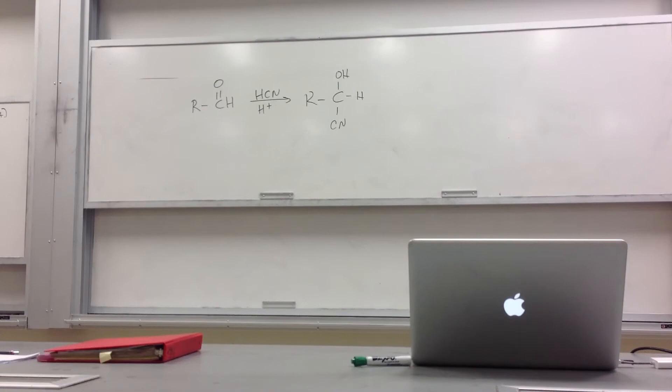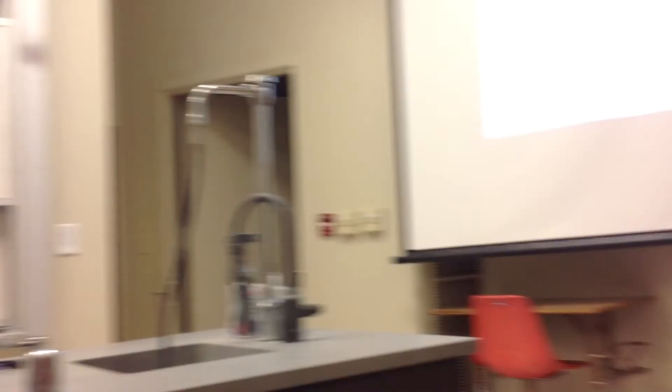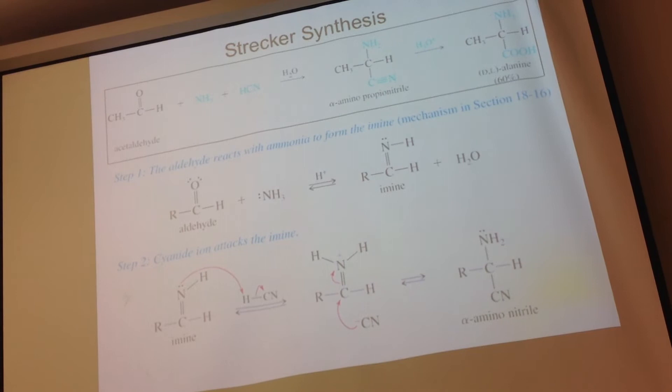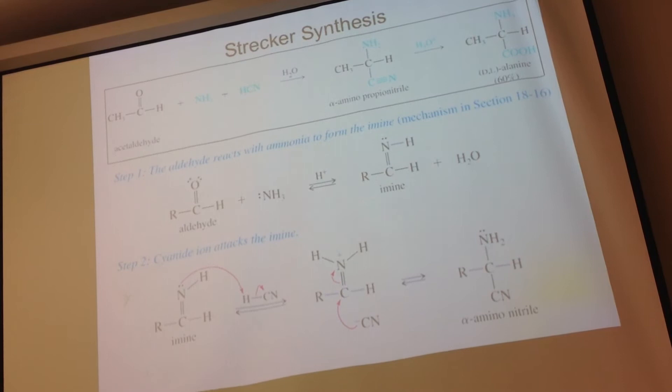You can take nitriles and with H₃O⁺ convert them into carboxylic acids — a reaction we've seen before. When it's all said and done, you choose whatever R group should be the side chain from the aldehyde. The carbon that was the aldehyde carbon becomes the alpha carbon, now bearing the NH₂ and the carboxylic acid. It's an interesting reaction using chemistry we know, applied in a surprising way.